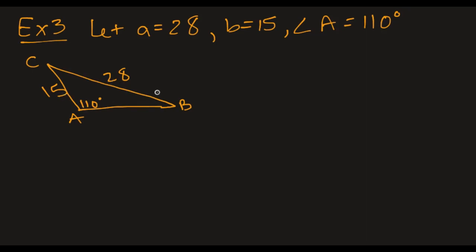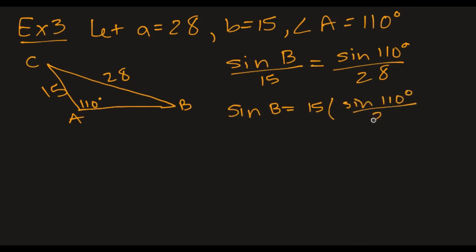so it must be angle B that we're going to solve first. So sine of B divided by 15 is sine of 110 degrees divided by 28. So the sine of B, I'm just going to multiply by 15, sine of 110 over 28, and I'm going to get a decimal value for this. Let me go get my calculator, and I'll figure that out. I suggest when you get these decimal values going out at least four decimal places, if not actually just using the entire thing.